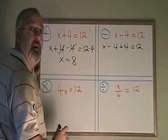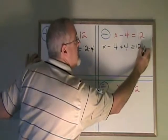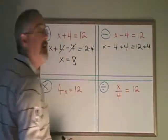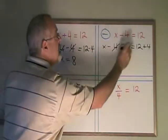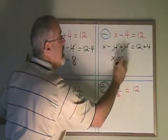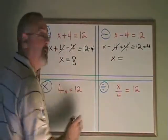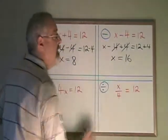But what I do on one side, I have to do on the other, so I am also adding a 4 on the right side. These cancel. My x is isolated and is equal to 12 plus 4, which is 16. I have my answer.